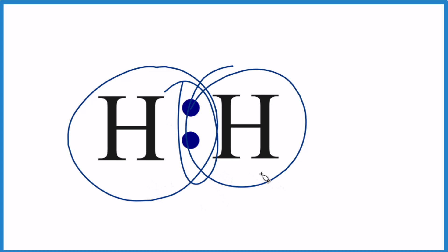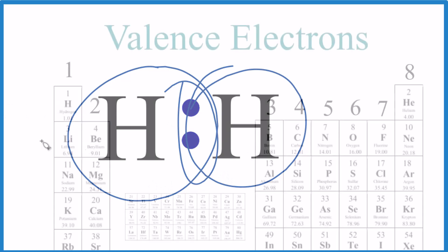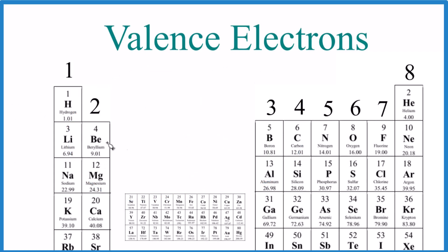So hydrogen has 1 valence electron. And again, this is a really useful trend to know when we're looking at valence electrons. Group 1, 2, group 13 has 3, 14 has 4, all the way to group 18, which has 8 valence electrons, except helium, that only has 2.